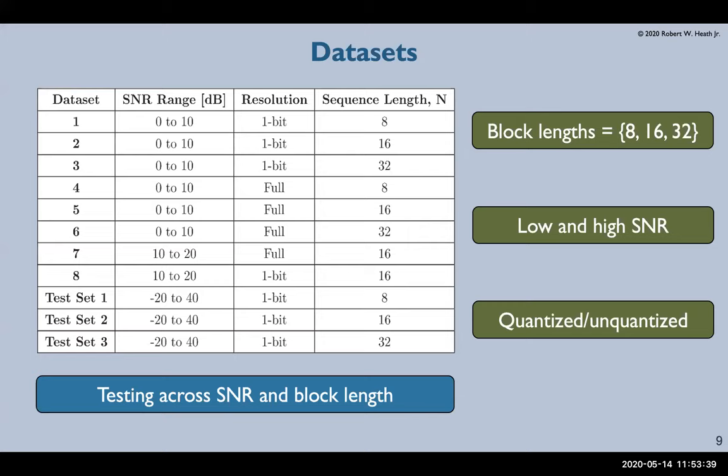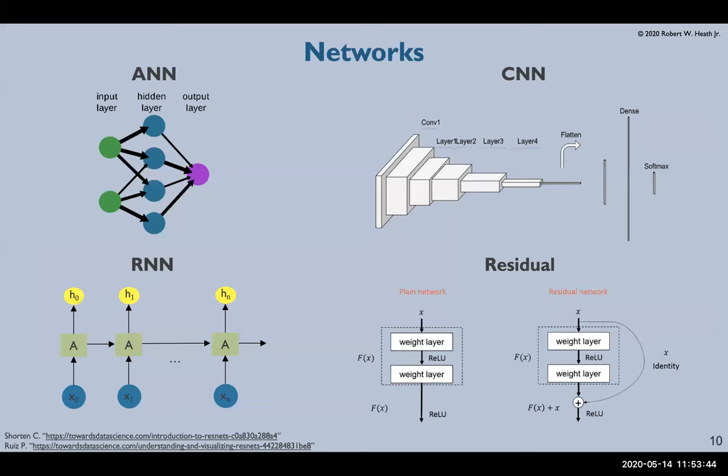Once we have this data, we need to consider what network architectures are best suited to the problem. We first looked at three classical architectures, specifically the artificial neural network or fully connected, the convolutional neural network,